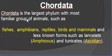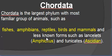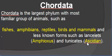Chordata is the largest phylum with the most familiar group of animals such as fishes, amphibians, reptiles, birds, and mammals. It also includes less-known forms such as lancelets — for example Amphioxus — and tunicates — for example Ascidian.